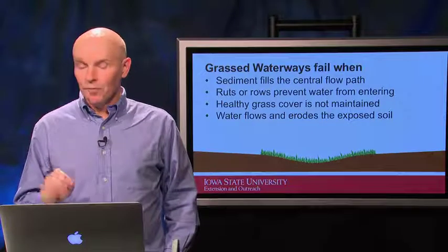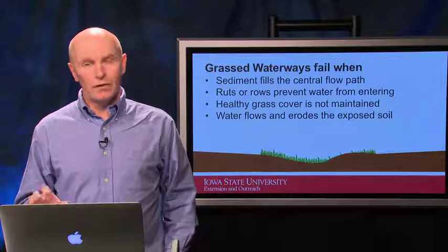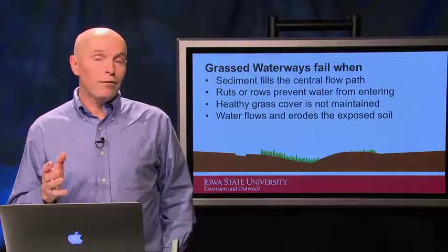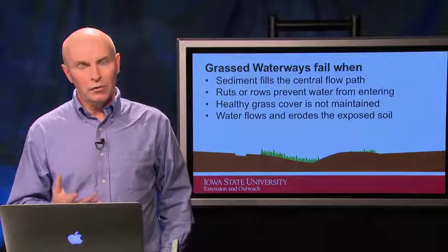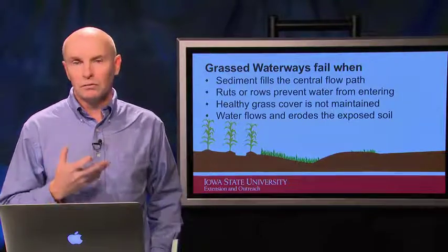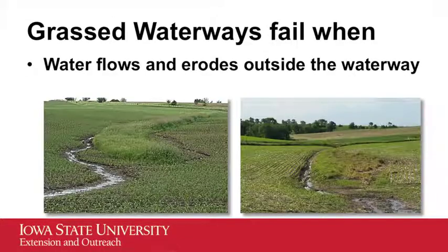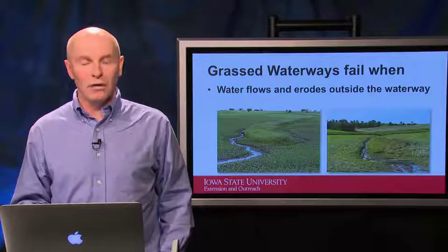Grass waterways can fail if sediment moves off the field and builds up in the lower portion, or if wheel tracks run parallel to the waterway, or even if crop rows themselves are planted parallel to the waterway. They can also fail if the grass cover is not maintained. In any of these cases, water moving down unprotected flow paths can cause erosion along or inside the waterway, and you may see gullies forming — a scene all too frequent in Iowa along grass waterways.